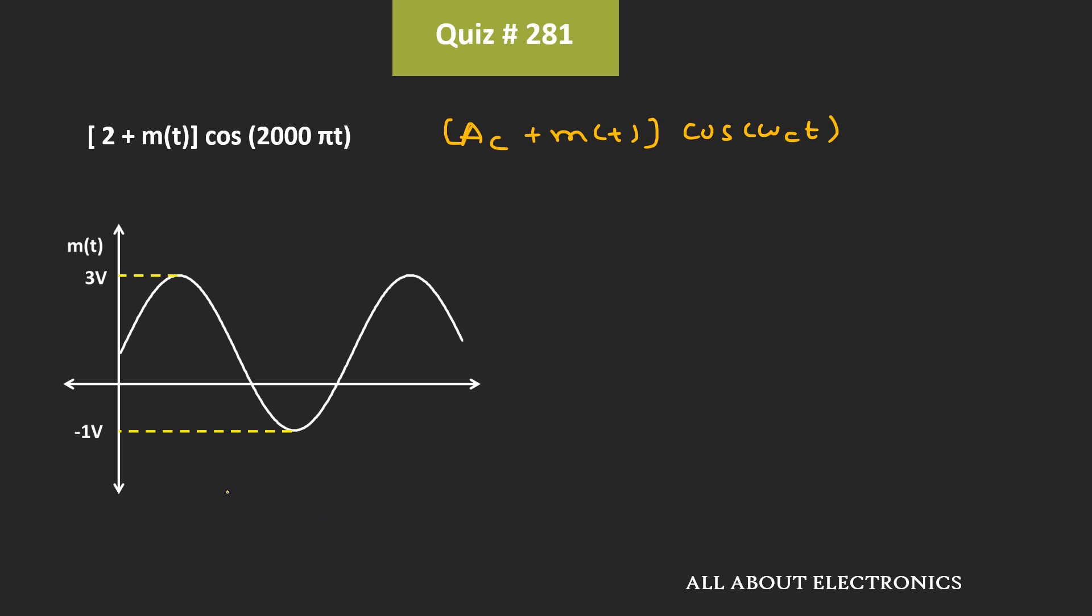Now generally we know that for the AM signal, the modulation index μ can be given as the maximum amplitude of this message signal, that is MC max divided by carrier signal, that is AC. But this expression is valid only when the message signal is symmetric.